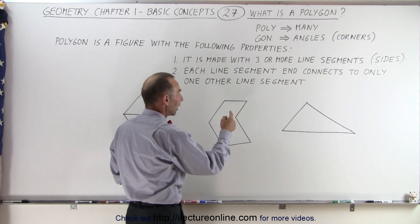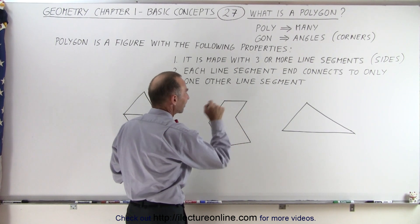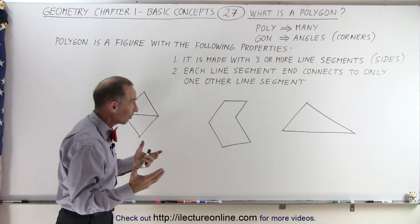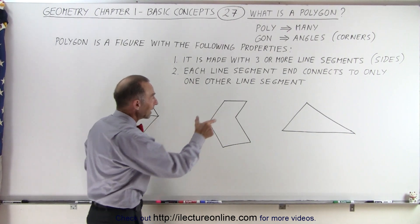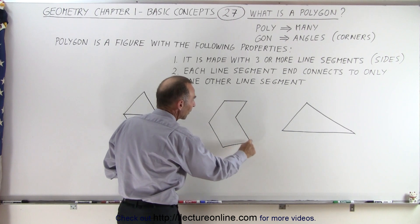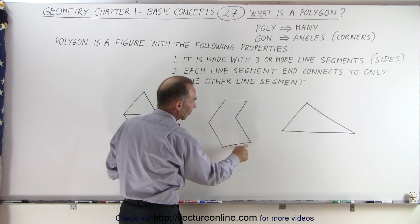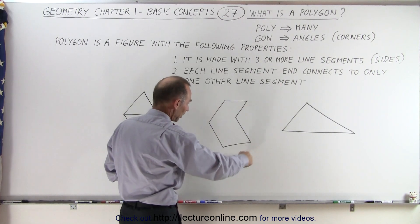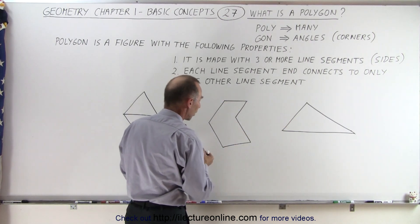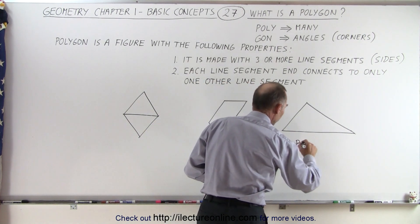Here we have another polygon. Again we have one, two, three, four, five, six sides. So this has six sides. And notice that each side, each line segment only connects to one other line segment on each of the ends. So here it's connected to this line segment and the other side is connected to this line segment. So clearly you can see that these two are considered polygons. They have met both of the conditions.